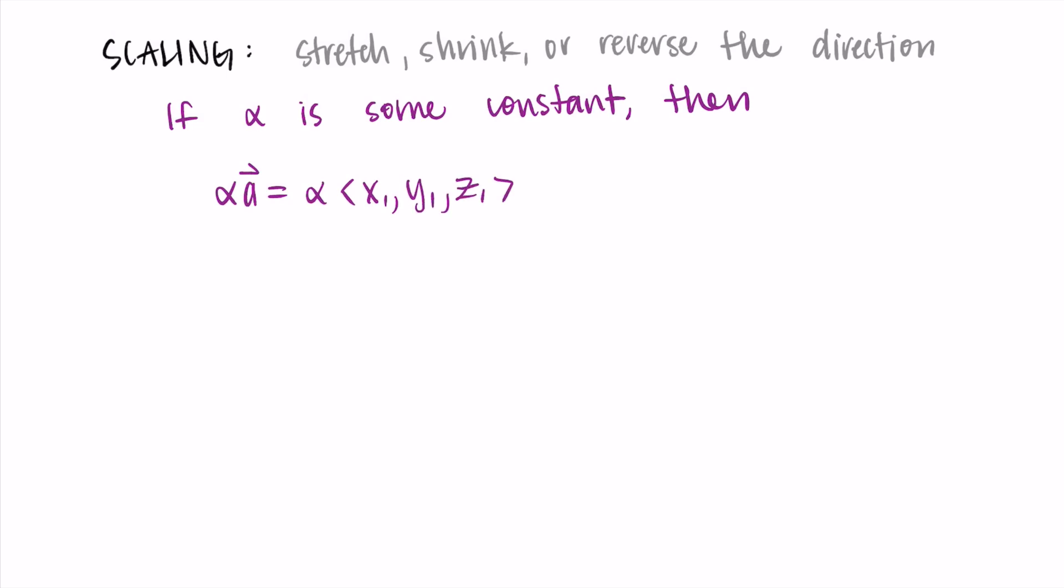And what we do is we just distribute that alpha into each of the components. So we do alpha times x1, alpha times y1, and alpha times z1. So each of the components gets stretched by alpha or shrunk by alpha or maybe reversed by alpha. So how do we know what happens?